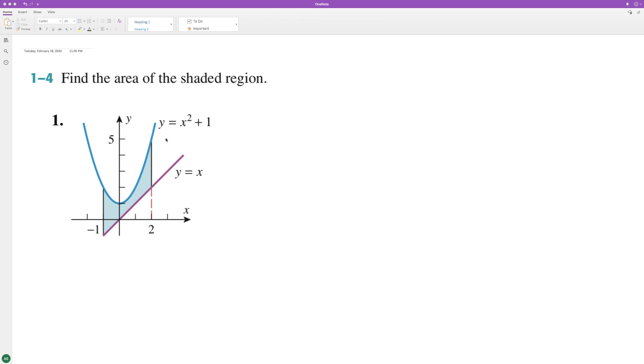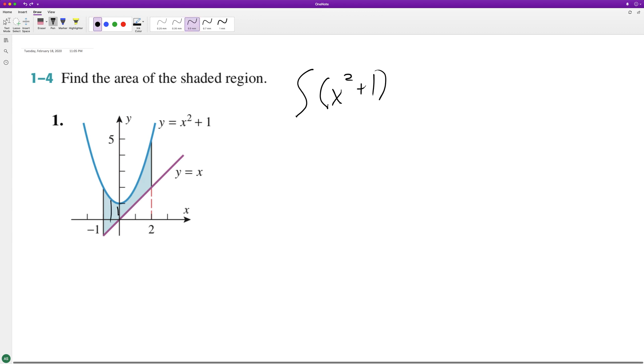Two curves here, so to do that what we'll do is integrate x squared plus one, and this gets everything below it. Then we're going to subtract y equals x, so it's just going to be x, and we're going from negative one to two.